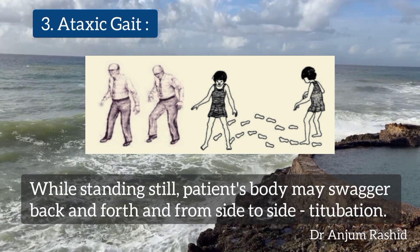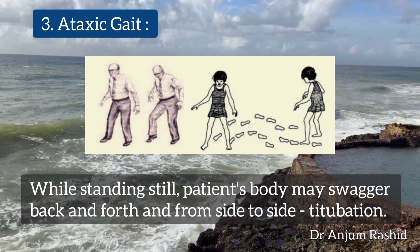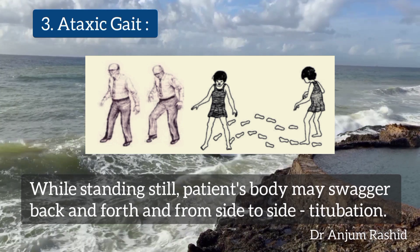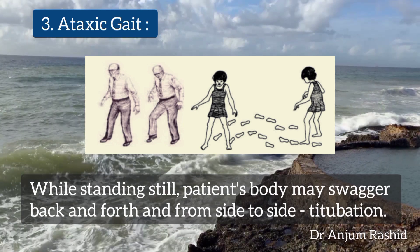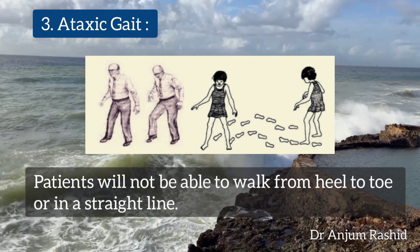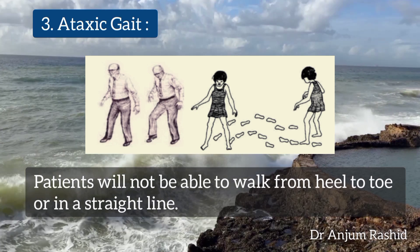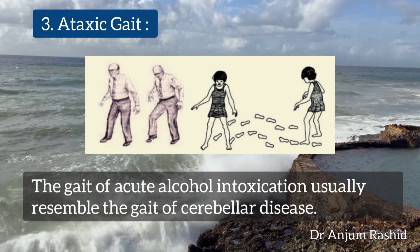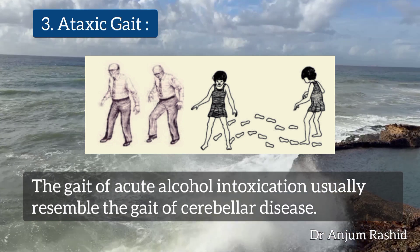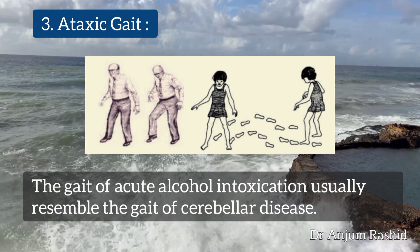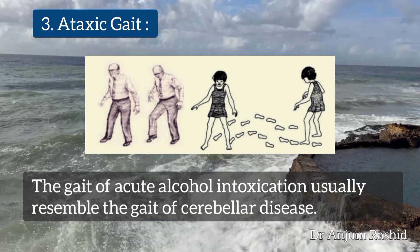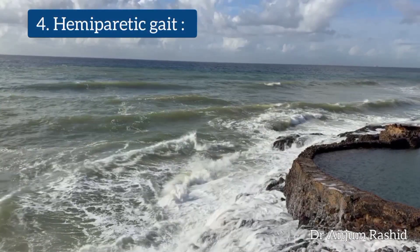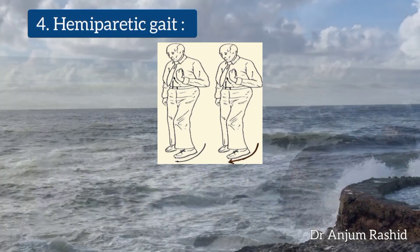In ataxic gait, while standing still the patient's body may swagger back and forth and from side to side; this is known as titubation. The patient will not be able to walk heel-to-toe or in a straight line. The gait of acute alcohol intoxication usually resembles cerebellar ataxic gait.